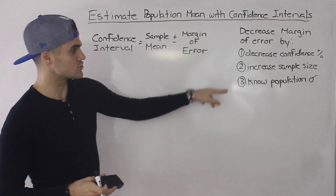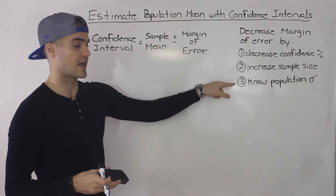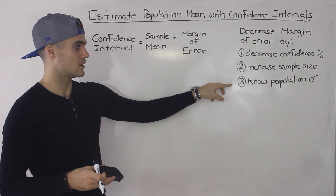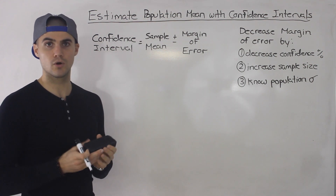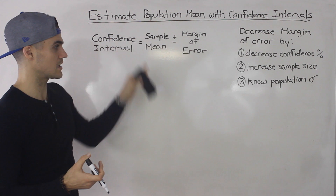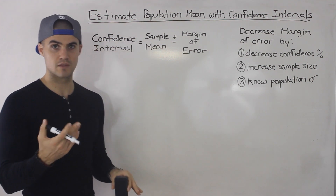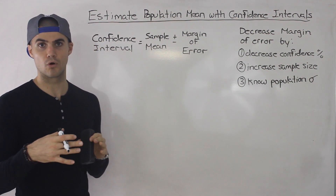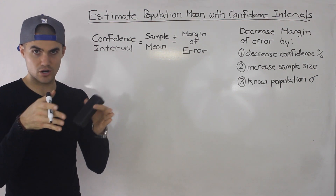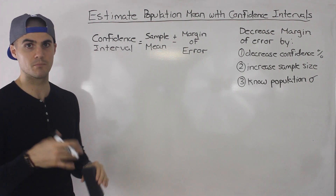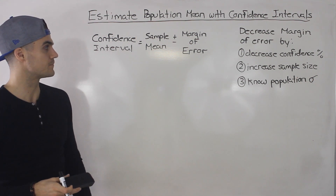The third strategy is knowing the population standard deviation. We don't know the mean — that's what we're estimating — but if we can know the population standard deviation, that gives us a more accurate estimate, a tighter confidence interval, and decreases our margin of error.